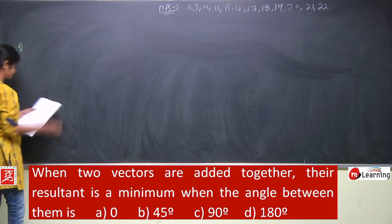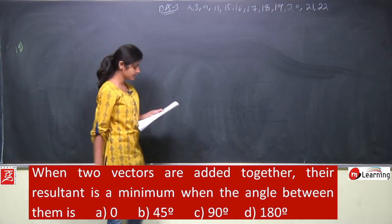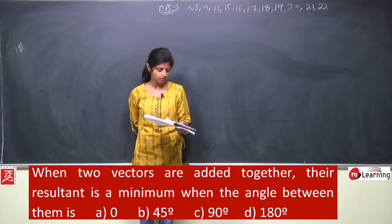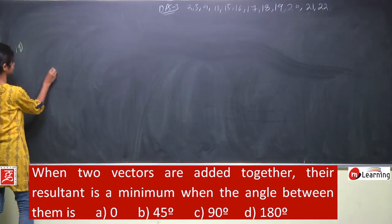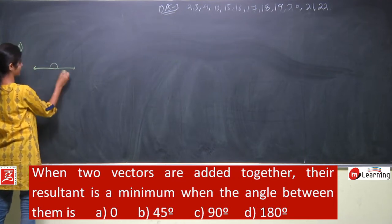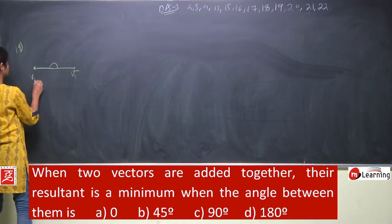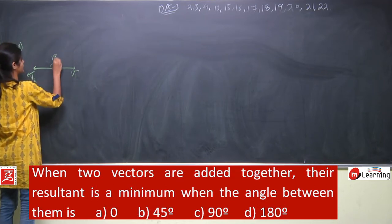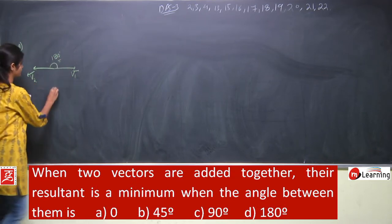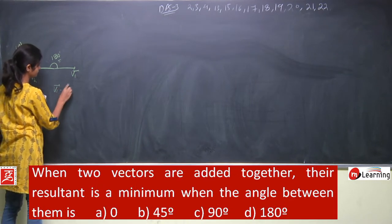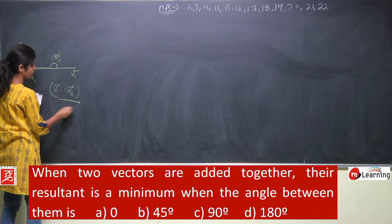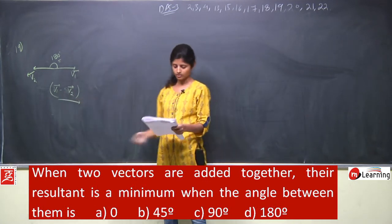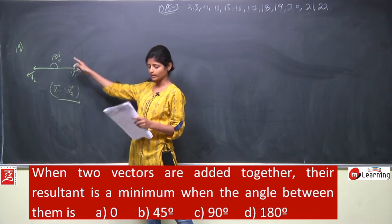Question number 19: When two vectors are added together, their resultant is minimum when the angle between them is 180 degrees. We have already discussed that the resultant of two vectors is minimum when the angle between them is 180 degrees — that is, V1 minus V2. This is the minimum value you can obtain on adding two vectors, the minimum resultant value.